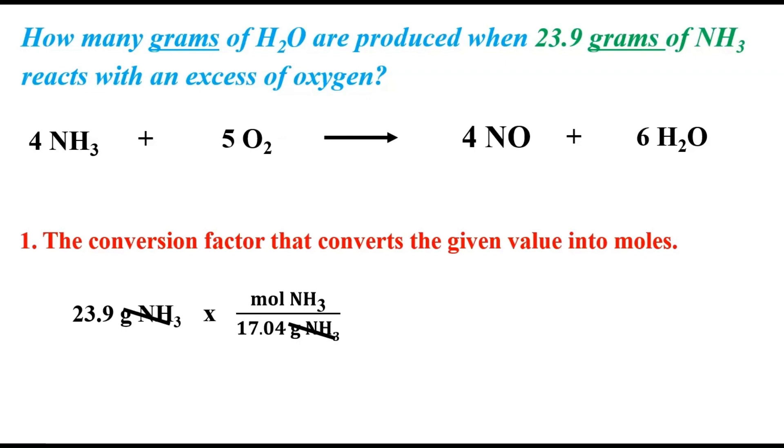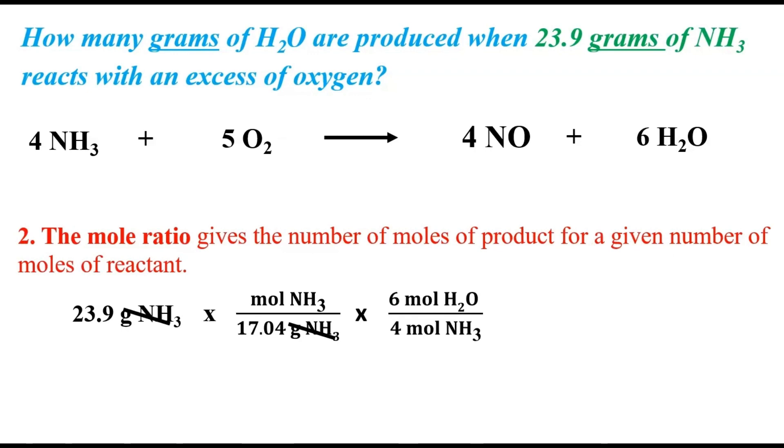The second thing we're going to have to do is to use the mole ratio, which will give us the number of moles of product for the given amount of reactant. You'll notice here that the moles of ammonia are lined up with the moles of ammonia in the conversion factor, so we can get rid of them.